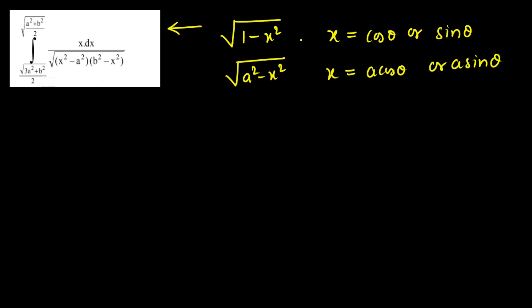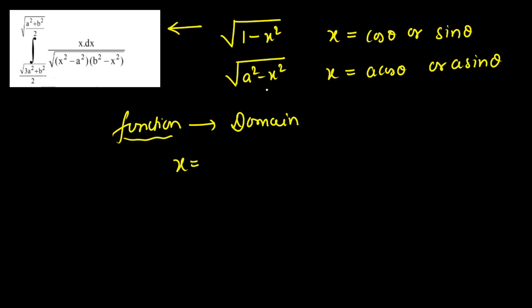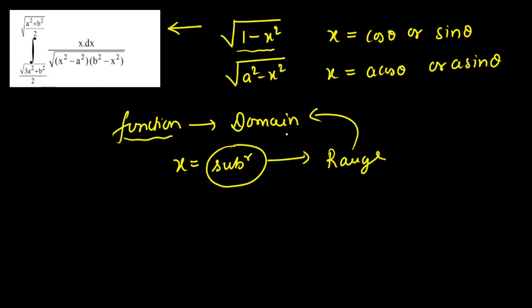We learn the substitution, but most don't focus on the logic. The logic is: first, select the function — here it's root over (1 − x²) or (a² − x²). Then find its domain. The domain in the first case is [−1, 1], and in the second case [−a, a]. The key principle is: if the range of the substitution matches the domain of the function, then the substitution is valid — otherwise we cannot substitute.